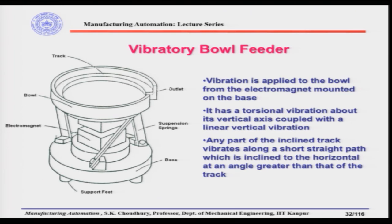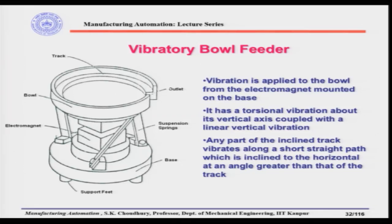The vibratory bowl feeder is one of the most important and versatile feeders for small engineering parts. It consists of a bowl and a base; the bowl is connected to the base with leaf springs. In the base of the bowl there is an electromagnet that imparts vibration to the bowl. Inside the bowl there is a track inclined to the horizontal, spirally going from the base of the bowl to the outlet.